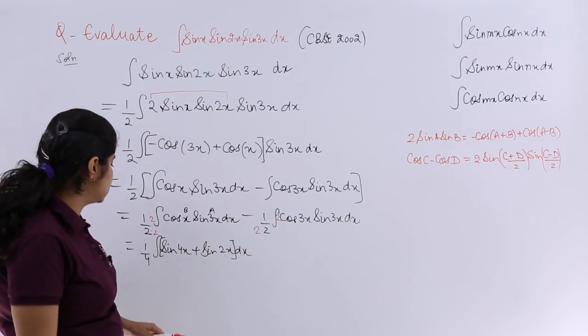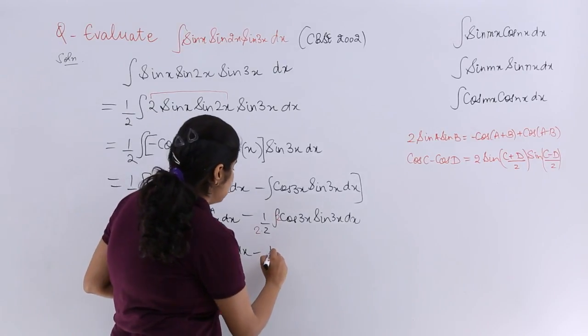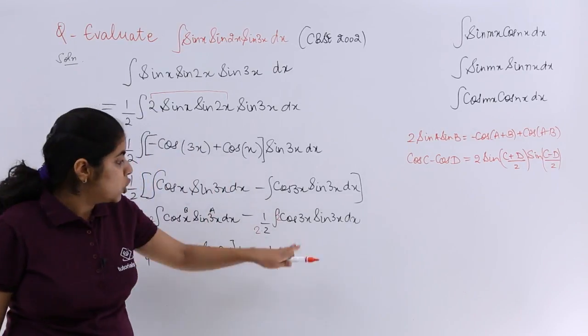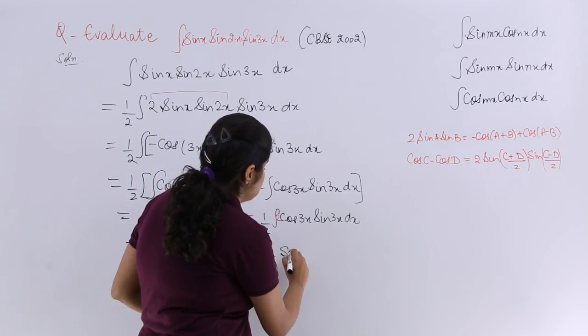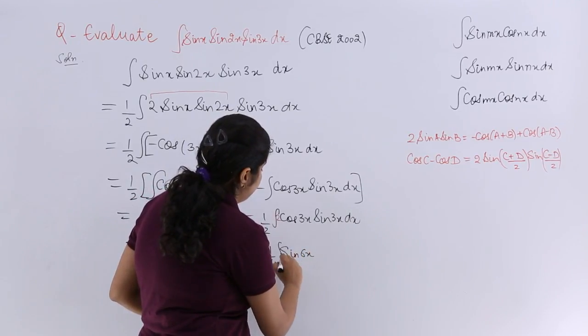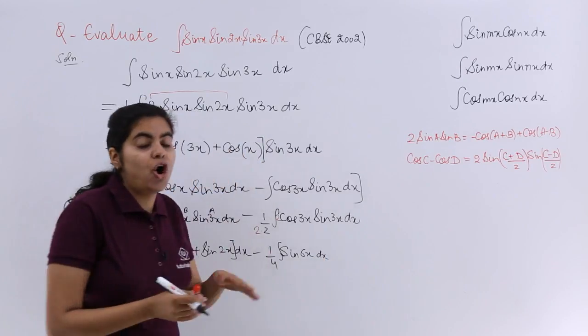Then next is what? Minus 1 by 4 again. 2 sin theta cos theta because thetas are same. So it is nothing but sin 2 theta. Now after all of these steps, the last steps are left. Let's integrate it.